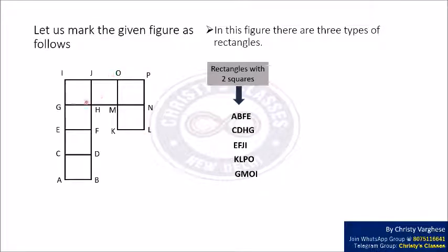Next is GMOI. Next one is HNPJ. So there are a total of 6 rectangles with 2 squares.